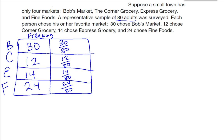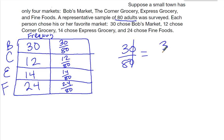If I wanted to figure out the probability that the town's favorite market is Bob's Market, I'm going to take my fraction 30 over 80 and reduce it. If I have a zero on top and bottom, I can cancel them, so this reduces down to 3 eighths. So the probability that Bob's Market is the favorite is going to be 3 eighths.